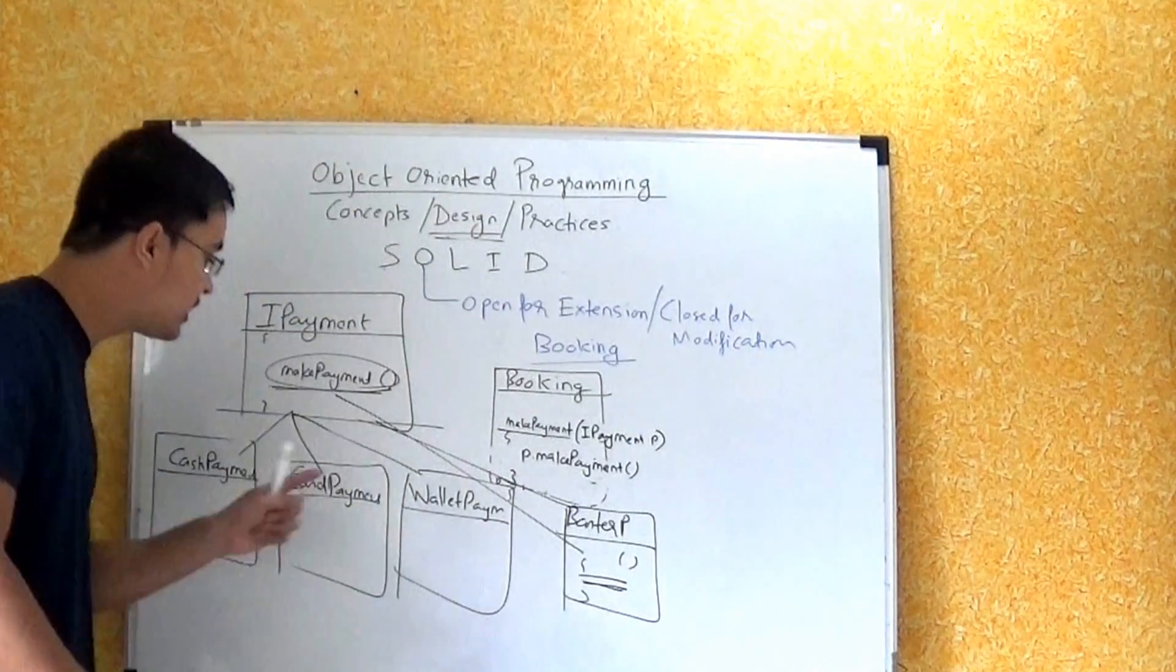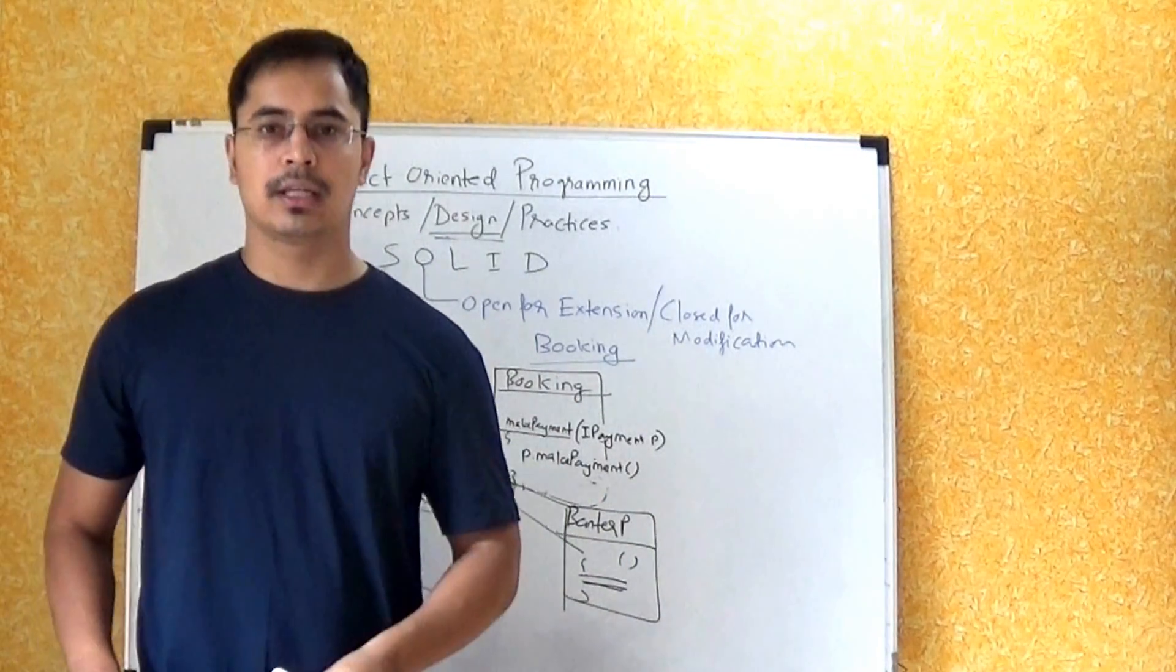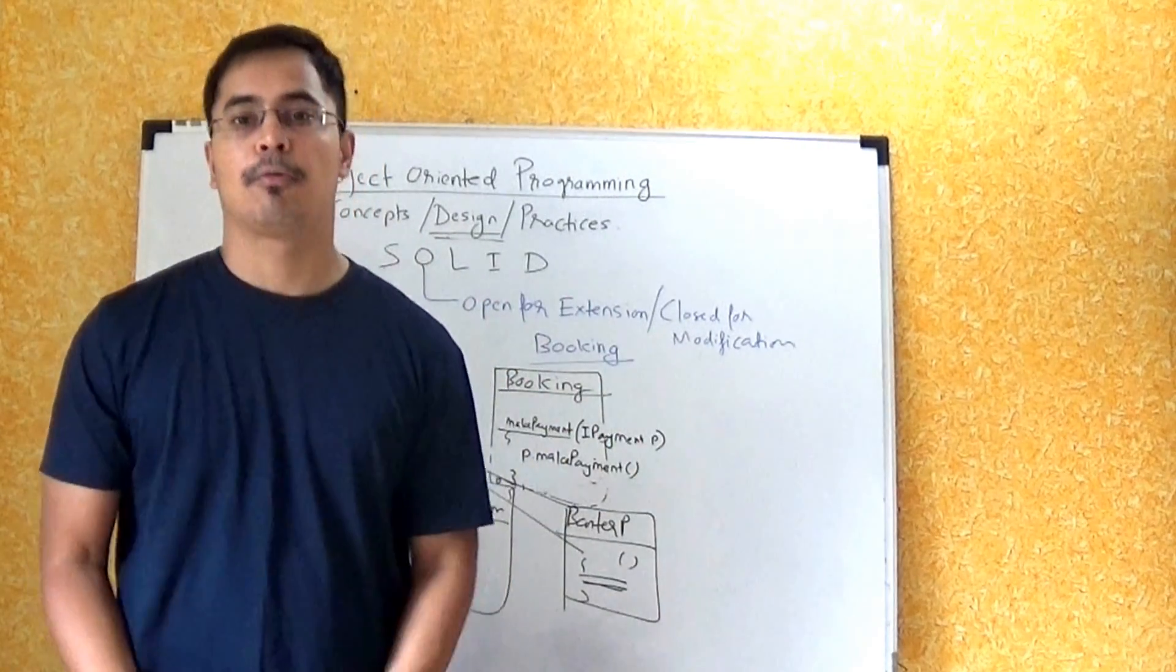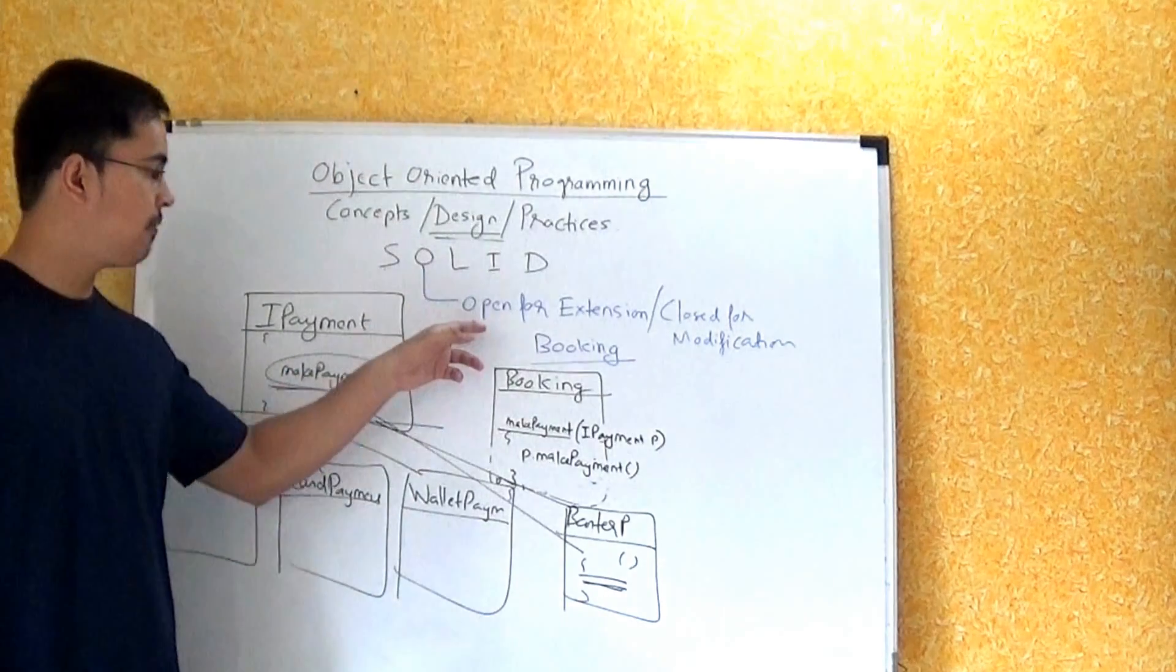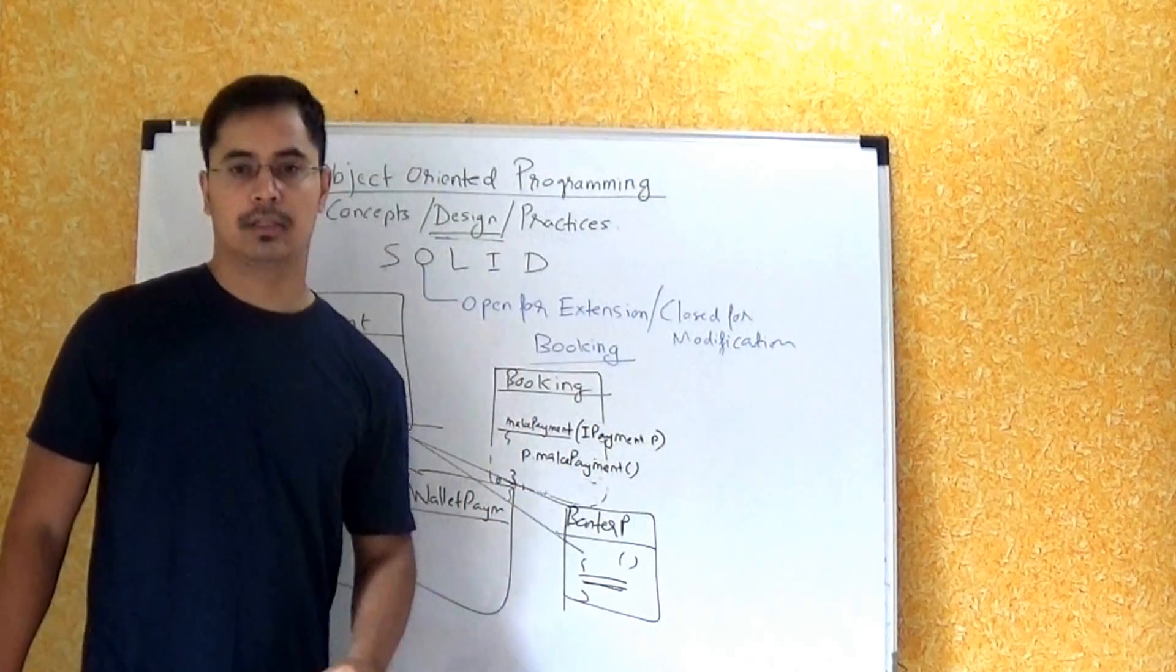without changing the existing code, without breaking the existing logic, without causing unnecessary errors or bugs in production environment. So this is one more example of the principle of open for extension, closed for modification.